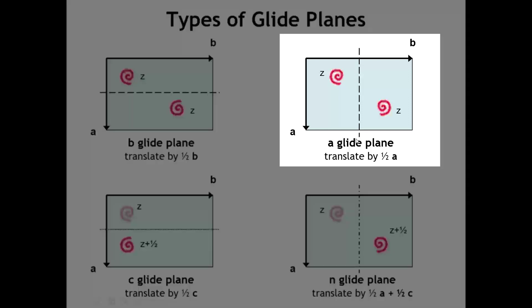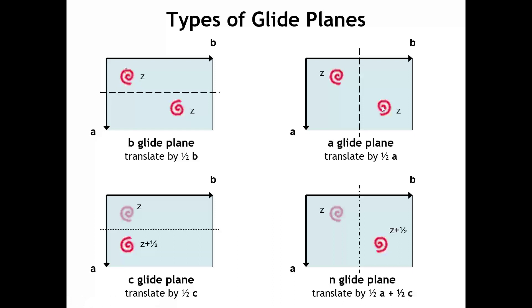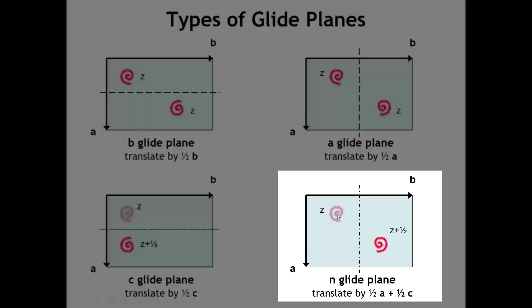We could also have an A glide. The A glide cannot be perpendicular to the A axis, because then the translation would be toward the plane rather than parallel to it. Here the glide plane is perpendicular to B, so we have a reflection and then a translation by one half A. The A, B, and C glide planes are all called axial glides, because the translation part is parallel to one of the lattice vectors. We can also have glides where translations are not parallel to a given lattice vector — the most common of those are called diagonal glides, or N glide planes. Here we mirror and then translate by one half A plus one half C — two lattice vectors contributing to the translation.